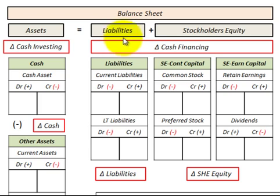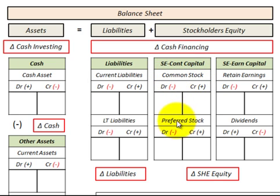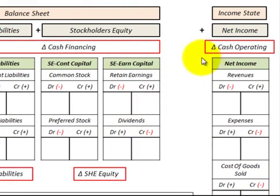Moving over to our liabilities and stockholders' equity section on the balance sheet, that would be our financing activities — dealing with long-term liabilities for bonds and so forth. Then contributed capital includes common stock and preferred stock. Earned capital would be retained earnings and dividends. Moving over to our income statement, or net income, that would be the cash for operating activities — our revenues, expenses, and cost of goods sold.